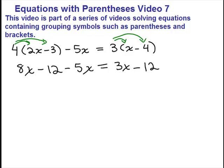And then we want to simplify each side. The right-hand side is simplified, but on the left-hand side, we have an 8x and a minus 5x for like terms. So that's 3x minus 12 equals 3x minus 12.